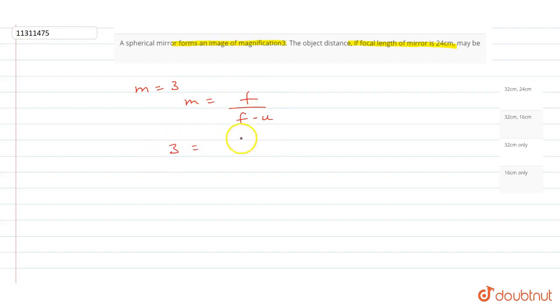So 3 is equal to f. The focal length of this mirror is minus, so minus 24 upon minus 24 minus u. So this is equal to minus 24 into 3. 3 into minus 24 minus u is equal to minus 24. Solve, then u will come. That is equal to minus 16 cm.